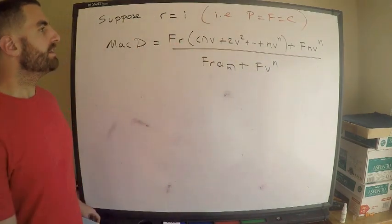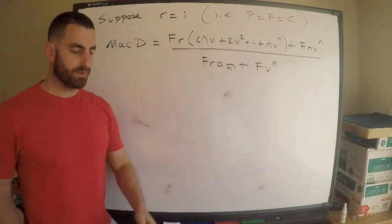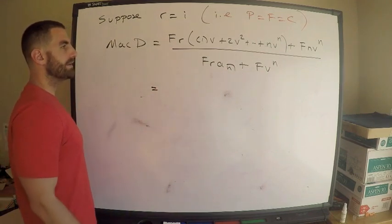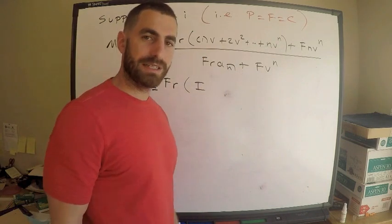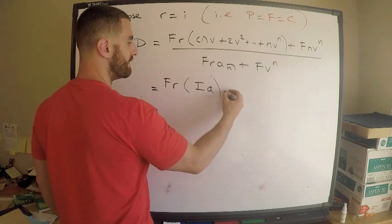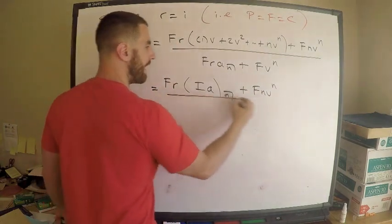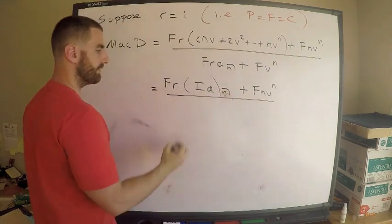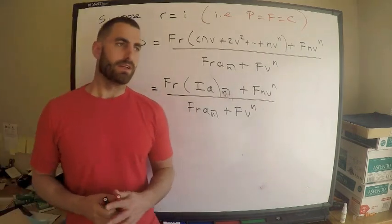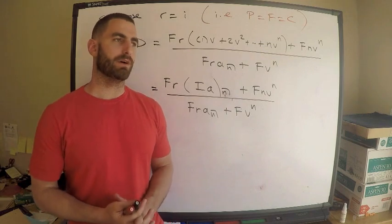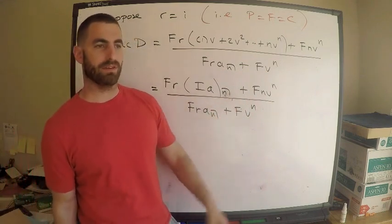This is the general expression for the duration of a coupon bond. Writing it out: the numerator is F·r times the increasing annuity-immediate (angle n) plus F·n·V^n, divided by F·r·a(angle n) plus F·V^n. If you've been studying for exam FM, you know exactly what that increasing annuity-immediate is. Just write this down — this is always the general formula.